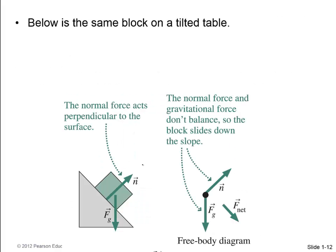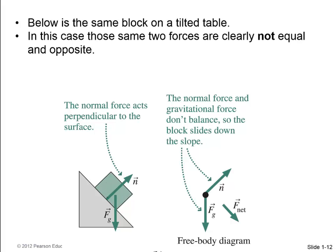For example, here's the same block and now you've tilted the table a little bit. In this case, the normal force is still perpendicular to the surface. It's up and to the right. And the weight is still acting downwards. So, these are no longer equal and opposite, and they don't cancel each other. In this case, the block will accelerate downwards.